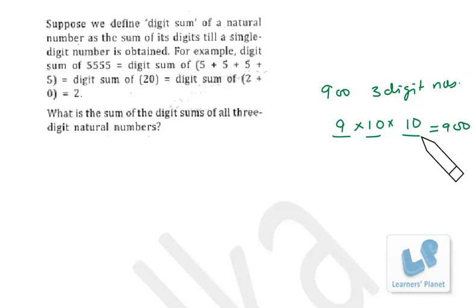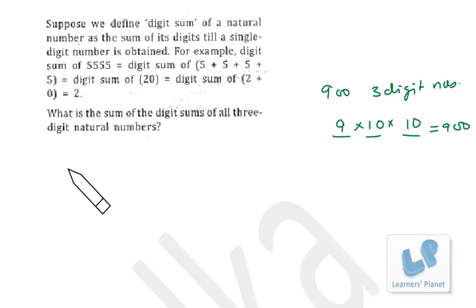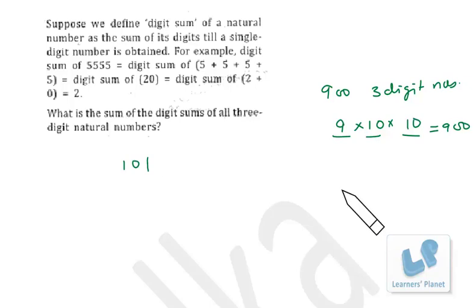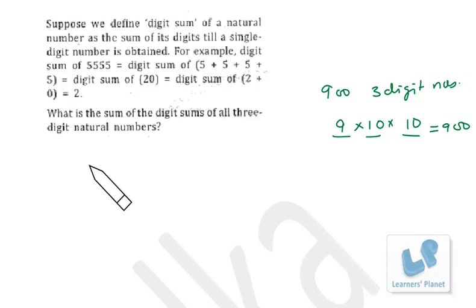For example, the digit sum of 101 is 2, the digit sum of 202 is 4, and so on. We have to find the sum of all the digital sums. One interesting fact: the digital sum equals the remainder when the number is divided by 9.